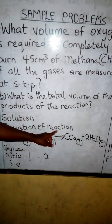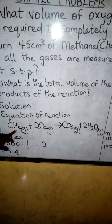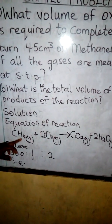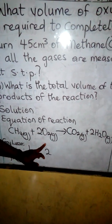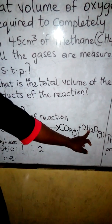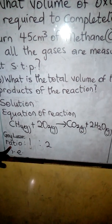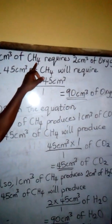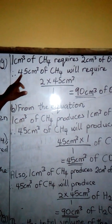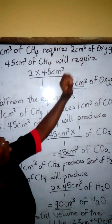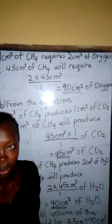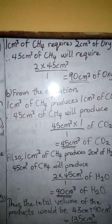Solution: The equation of reaction is written thus — methane gas reacting with oxygen gas to produce carbon dioxide and steam. From Gay-Lussac's ratio, we have one molecule of methane reacting with two molecules of oxygen to produce one molecule of carbon dioxide and two molecules of steam. It means that 1 cm³ of methane requires 2 cm³ of oxygen. Therefore, 45 cm³ of methane will require: 2 × 45 ÷ 1 = 90 cm³ of oxygen required to completely burn methane gas.